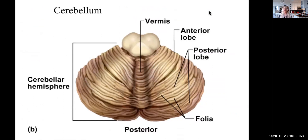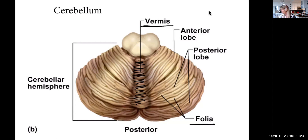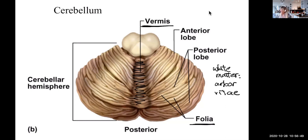The cerebellum has structures analogous to the cerebrum but with different names. The vermis is the connecting tissue between the two hemispheres. The folds are not called gyri — they're called folia, because they look like foliage. A lot of structures of the cerebellum refer to foliage or trees. Inside, the white matter axon tracts are known as arbor vitae, which means branching.